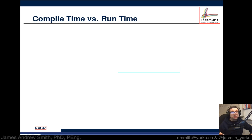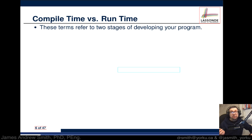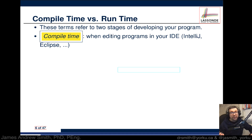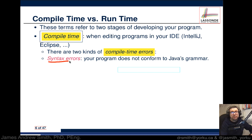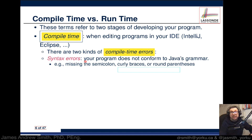Next, we need to talk about the difference between compile time and runtime. These two terms refer to two stages of developing your program. At compile time, we're talking about when you're editing the program in your IDE — IntelliJ or Eclipse. There are two types of compile time errors. The first comes from syntax: your program has words or structures that don't conform to Java's grammar, such as missing semicolons, missing curly braces, or missing round parentheses.